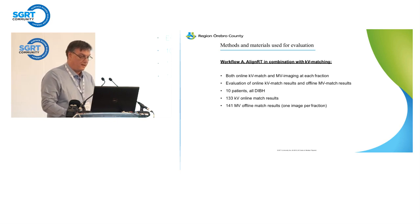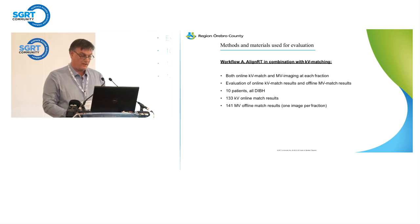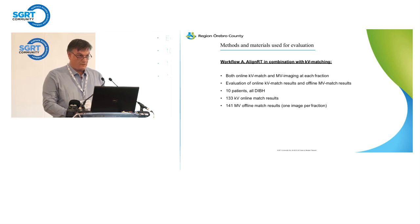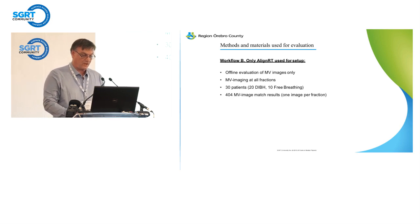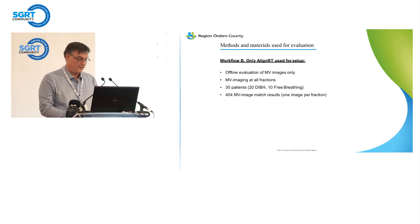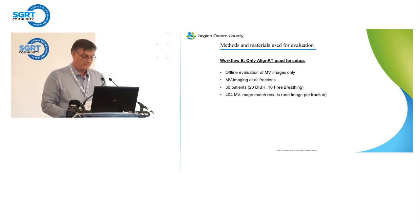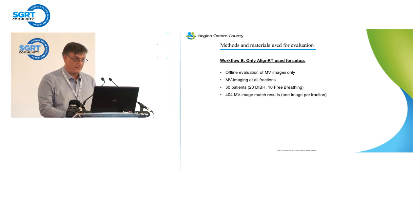To evaluate these different workflows: for workflow A, where we did both AlignRT and KV matching, we had KV images, KV match results, and megavoltage images to look at for each fraction. We evaluated results for 10 patients — all DIBH patients — with 133 KV results and 140 offline MV results. For workflow B, we evaluated only MV images. In this case, we evaluated 30 patients: 20 were DIBH and 10 were free breathing, giving us around 400 MV images to evaluate.